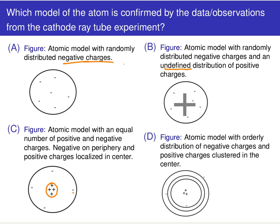So J.J. Thomson allows us to go further than choice A. We can go a step further — so in B, this model says not only do we have the negatively charged particles, but Thomson's experiments also confirm the presence of positive charge.